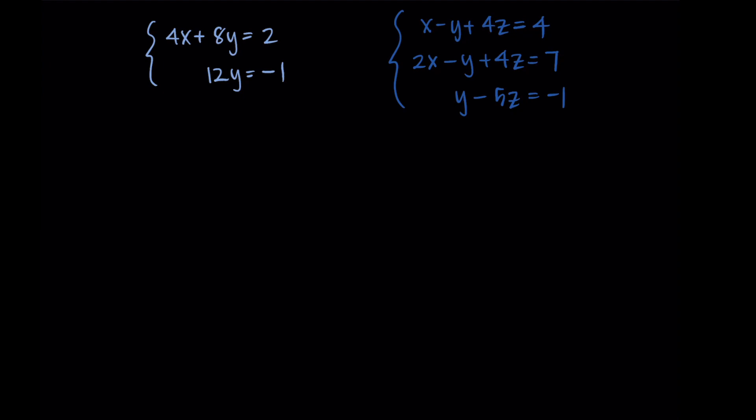Each equation is its own row with those coefficients. For the first equation I have 4, 8, and 2. For the second row I don't have any x's, but I have a 12 for y and then negative 1. Instead of writing an equal sign or any of the variables, I leave those things out and replace the equal sign with a vertical line. So this is my augmented matrix: 4, 8, 2 in the first row and 0, 12, negative 1 in the second.